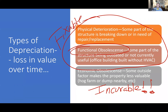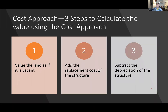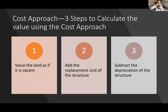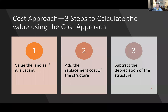The test questions on the cost approach really come down to the different types of depreciation. As for the approach itself, it's straightforward: land doesn't depreciate, so we come up with a separate value for the land as if it's vacant. Then we add what we think it would cost to replace the structure, and immediately subtract depreciation — because the structure's value has gone down over time. Land value plus replacement cost minus depreciation equals total value. That's the cost approach, and that's it for valuation as a topic.